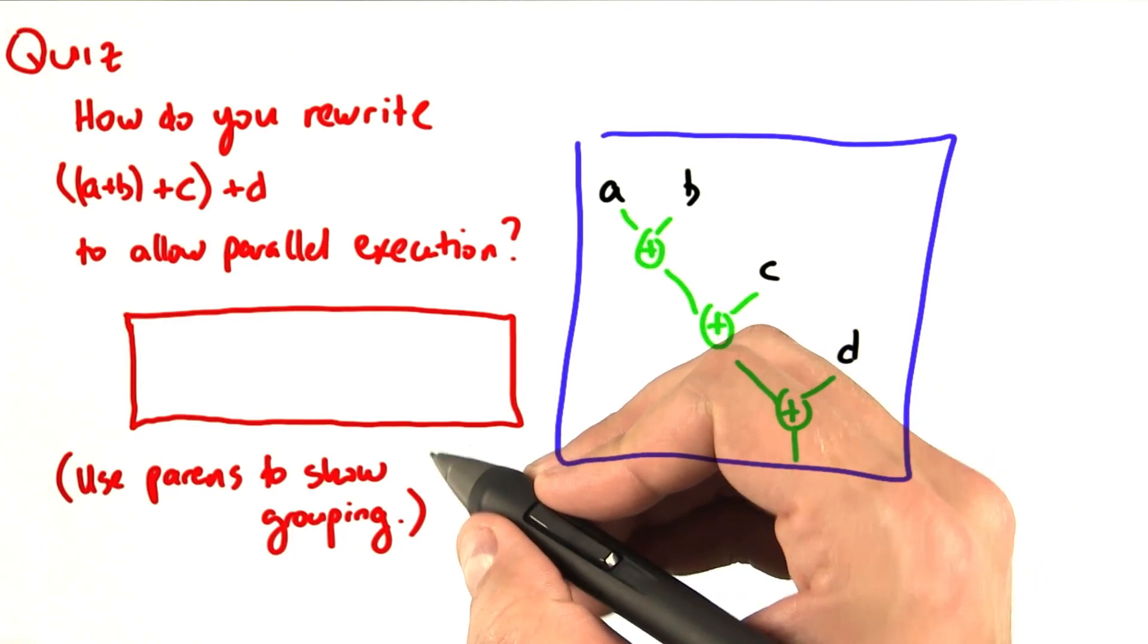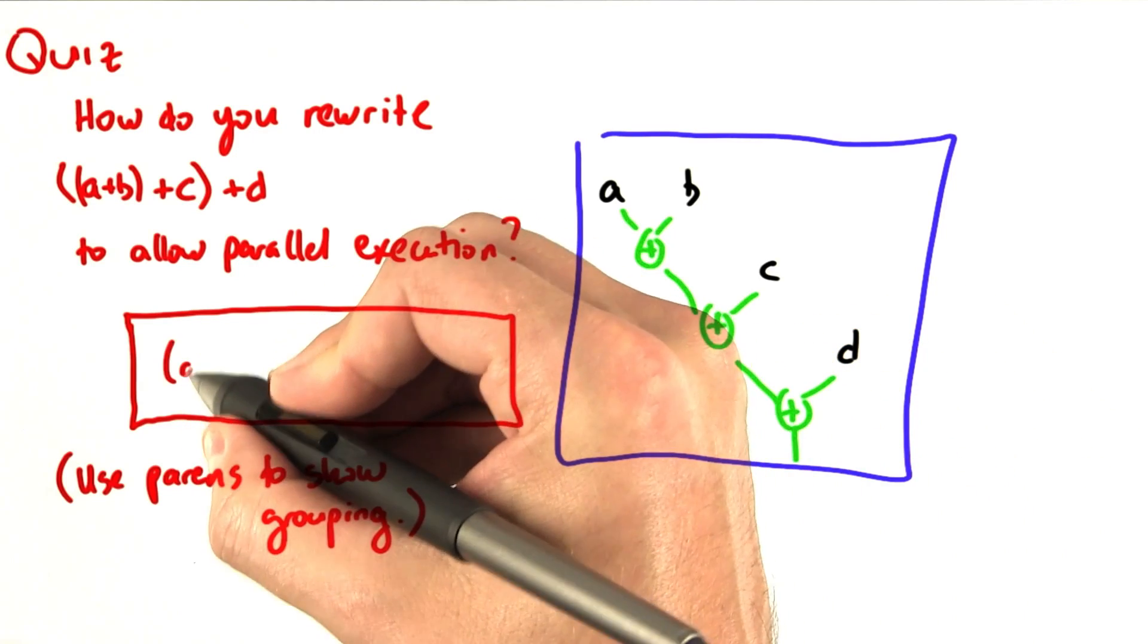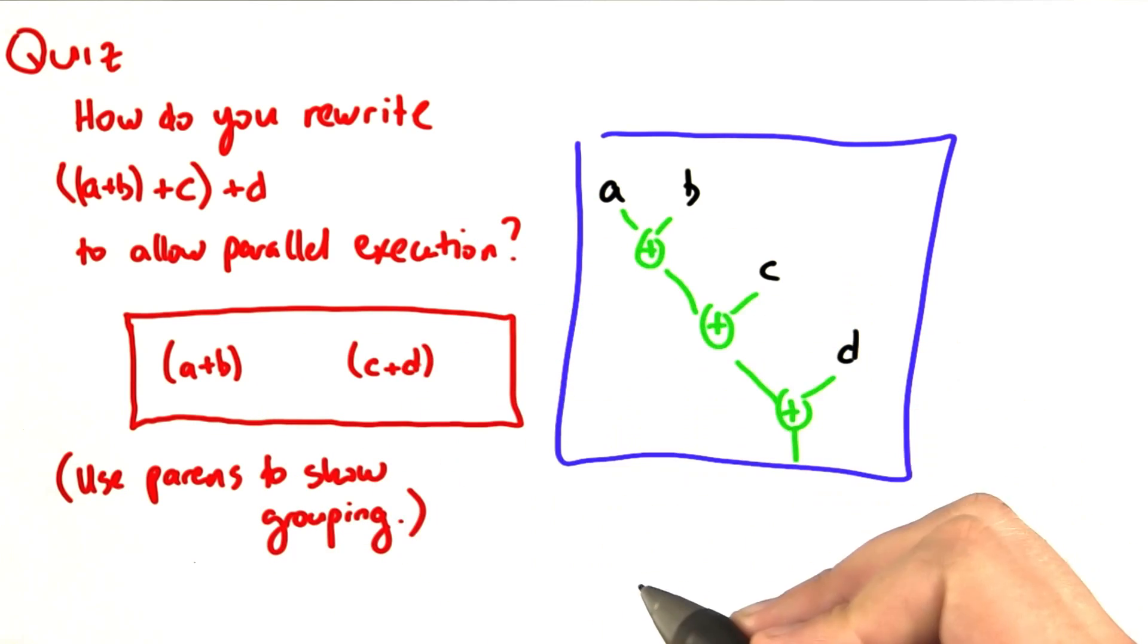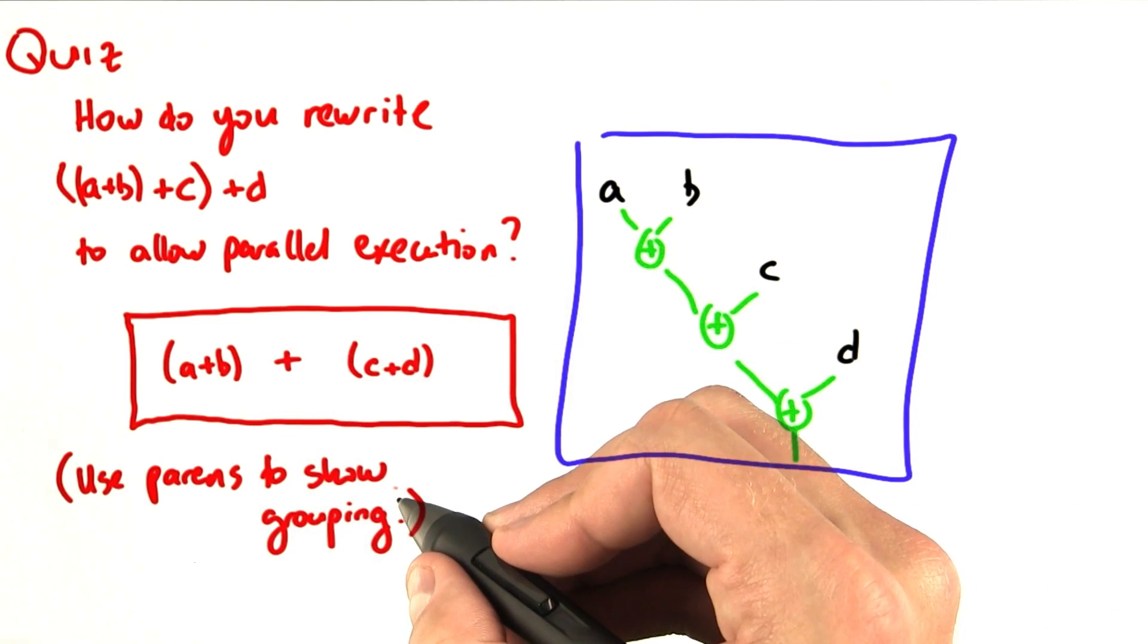So what we're going to try to do is expose a little bit of parallelism. We're going to do that by first computing a plus b, and perhaps at the same time computing c plus d, and then add the results together.